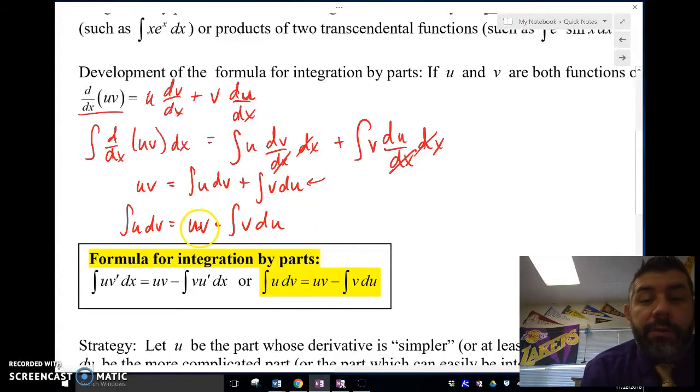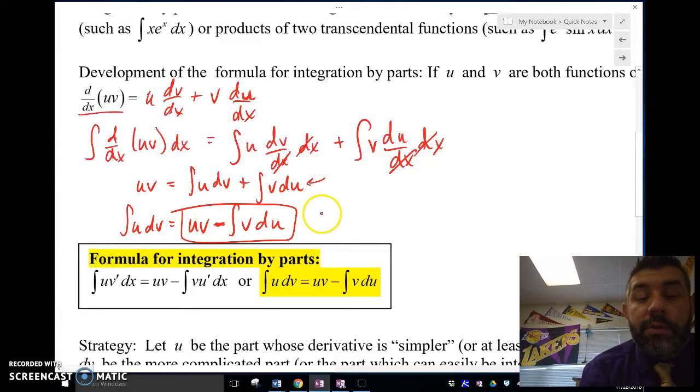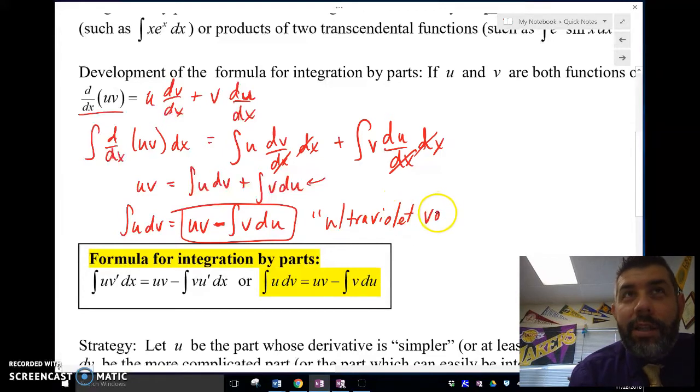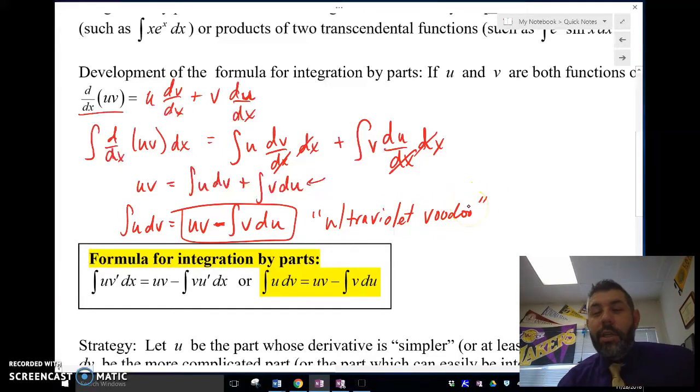And really what we're interested in doing is finding the integral of u dv. So I'm going to subtract this part over, and I'm going to get the integral of u dv is equal to uv minus the integral of v du. One way you can remember what order these go in is ultraviolet voodoo. Think of the 70s, I guess, or the 60s. Ultraviolet voodoo, man. Ultraviolet uv, voodoo v du. And there's a minus in there, and you can remember that formula.